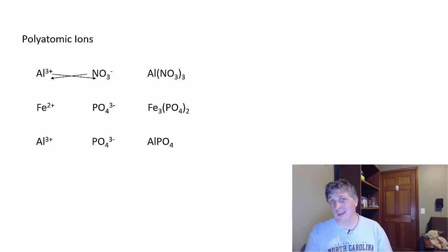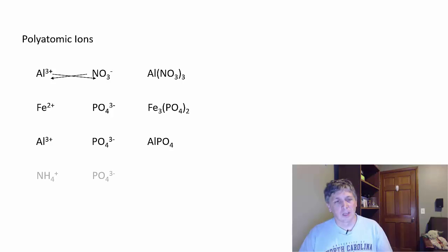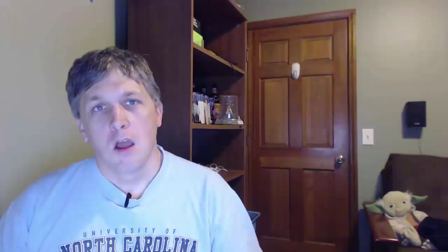One more example with a polyatomic cation: when ammonium and phosphate come together, that gives you a three-to-one ratio — three ammoniums for every one phosphate, written as (NH₄)₃PO₄. Alright, that's going to do it for today — see you guys next time.